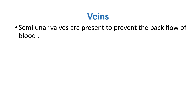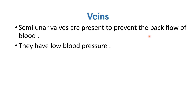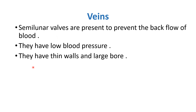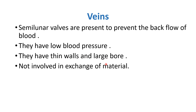Veins have semilunar valves present inside them, which prevent the backflow of blood. They have low blood pressure — that is why valves are present, so blood does not start flowing backward. They have thin walls and large bores. Arteries had thick walls and smaller bores. Veins, like arteries, are not involved in any kind of exchange of material.